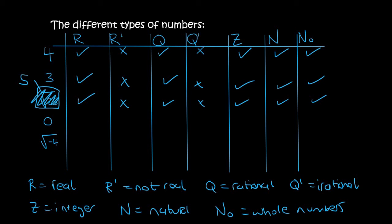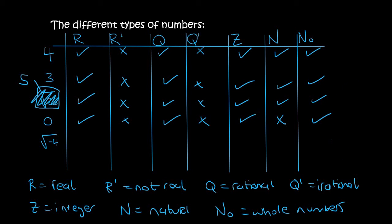The number 0 is real. It's rational because 0 is the same as 0 over 1, so you can write it as a fraction. It is an integer. It's not a natural number because when you count naturally you start at 1. It is a whole number though because whole numbers start at 0.